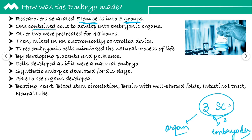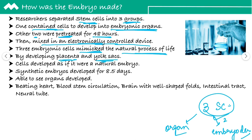So here, one stem cell starts developing into the embryonic organs, and the other two were pre-treated for 48 hours so that unke genes jo hai, woh overexpress ho paayein, and placenta and yolk sac ki synthesis kar paayein. Then, they were mixed in an electronically controlled device — yani in tene stem cells ko mix kiya gaya under the incubator. It was observed ki they have mimicked the natural process of life by developing the placenta and yolk sacs.